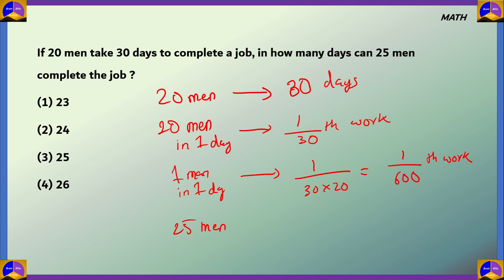Now we have to know how many days would it take for 25 men to complete the same job. So for 25 men in one day, 25 divided by 600 of the work would be done. Since each man would do 1 by 600, 25 men would be 25 by 600 of the work. Now to find the number of days, the number of days to complete the work would be the reciprocal of how much work is completed in one day, 600 divided by 25. If we solve this, we get 24 as the answer. So option 2, 24 is the correct answer for this question.